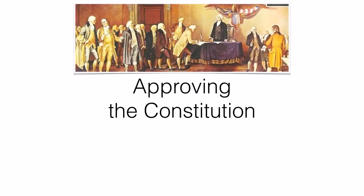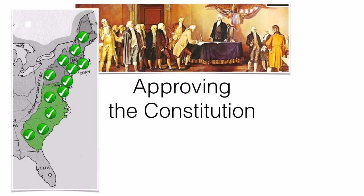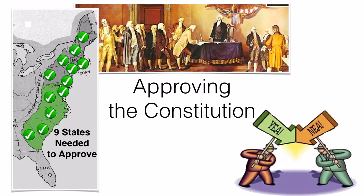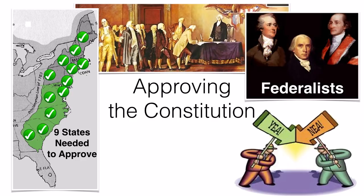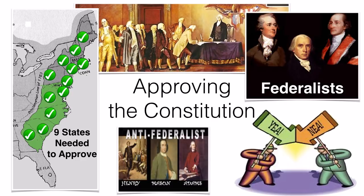After the major difficulties were worked out, delegates voted, signed, and approved the Constitution — but that did not make it go into effect. Each state would need to convene in their own legislature and vote to approve it. Once nine out of 13 states approved the Constitution, it would be put in place as the new government of the United States. This turned into a major debate: those in favor of approving it would be called Federalists, and those opposed would be known as Anti-Federalists.